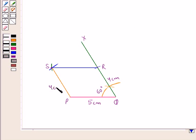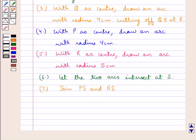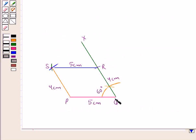This PS is equal to 4 cm and RS is equal to 5 cm. Thus this PQRS is the required parallelogram in which we have PQ equal to 5 cm, QR equal to 4 cm and the angle included between the two sides, that is angle Q, is 60 degrees.